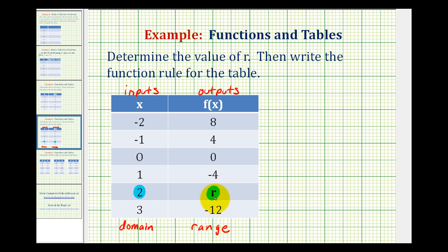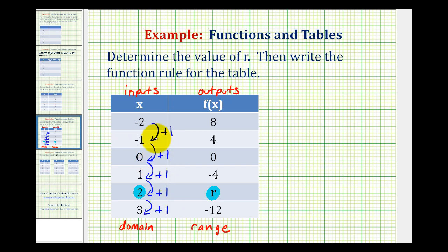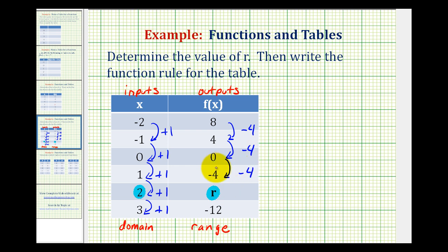To determine the value of r, the first thing we want to recognize is that if we look at the inputs as we work our way down this column, each of the inputs are increasing by one. Now if we look at the corresponding outputs, from eight to four is a decrease of four — so we're subtracting four. From four to zero, we're subtracting four. From zero to negative four, we're subtracting four. So by recognizing this pattern, if we have negative four and subtract four again, this gives us negative eight for r.